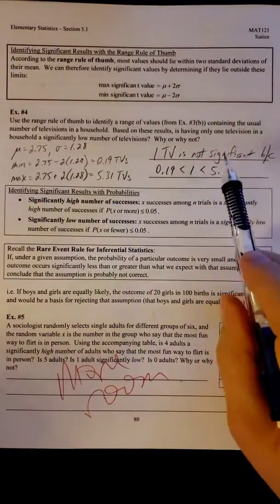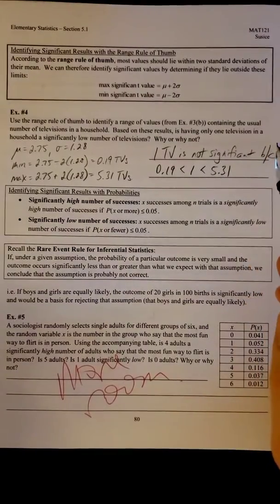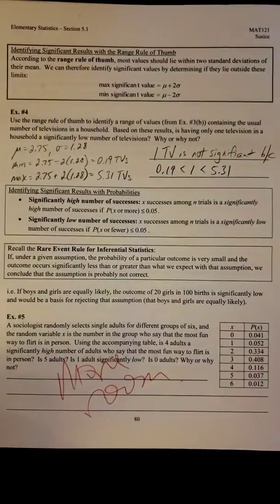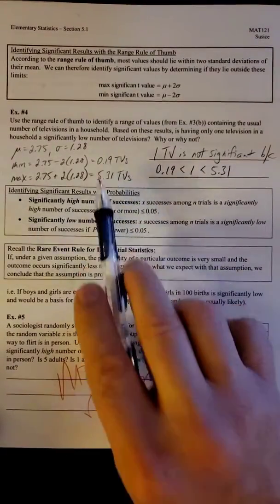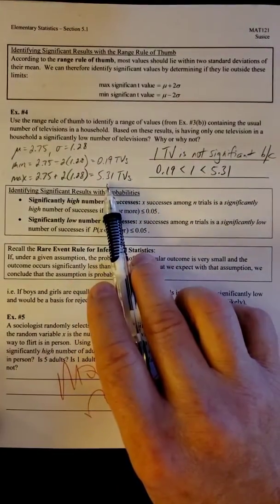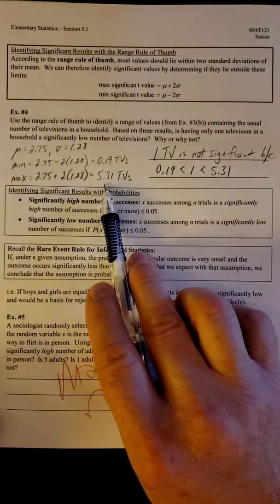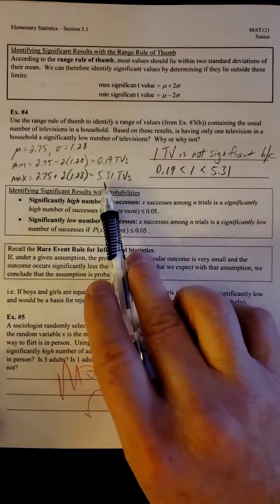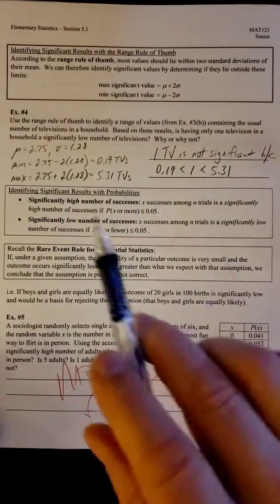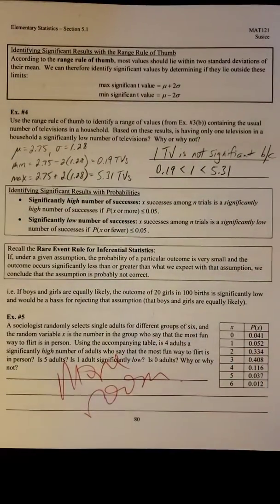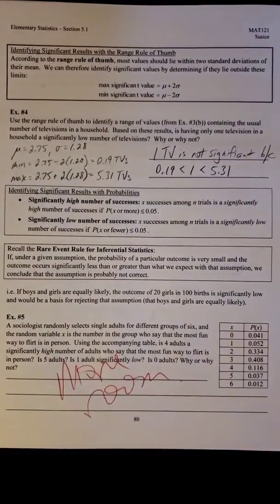Now, had the question asked about 0 TVs, 0 TVs would be significant. It would be significantly low because it's lower than the 0.19. Same idea if we had 6. 6 TVs would be significantly high because it's greater than the maximum. So hopefully that makes sense. Range rule of thumb and significant values is usually pretty cut and dry. It's got to be in one of those three buckets.